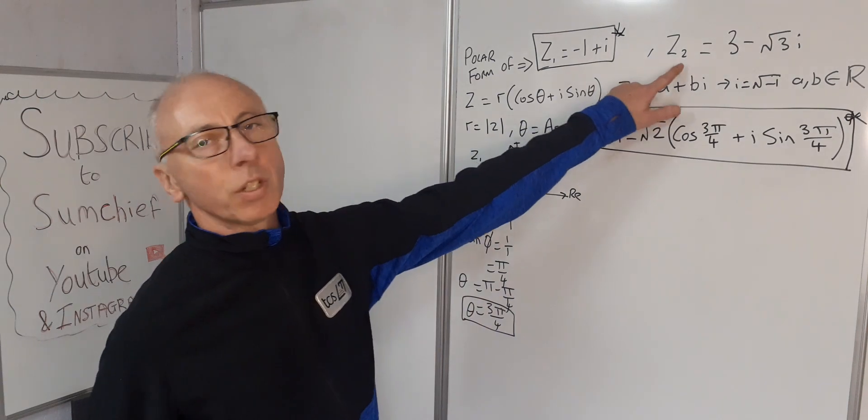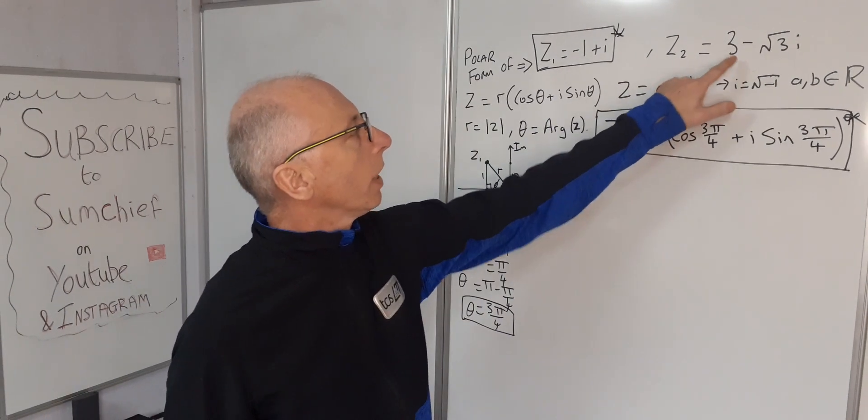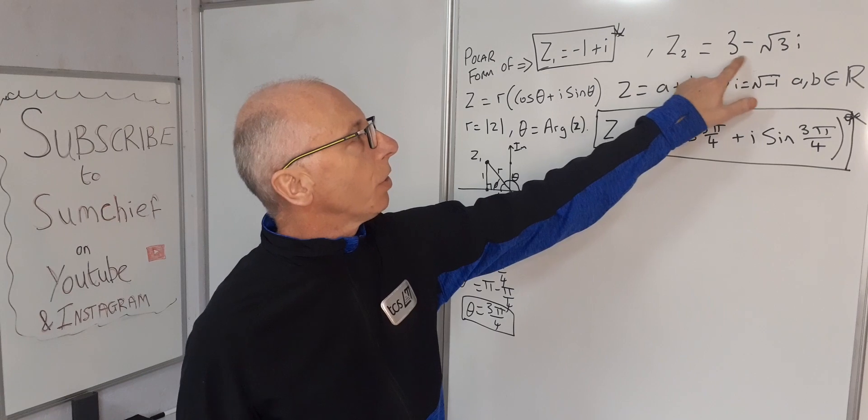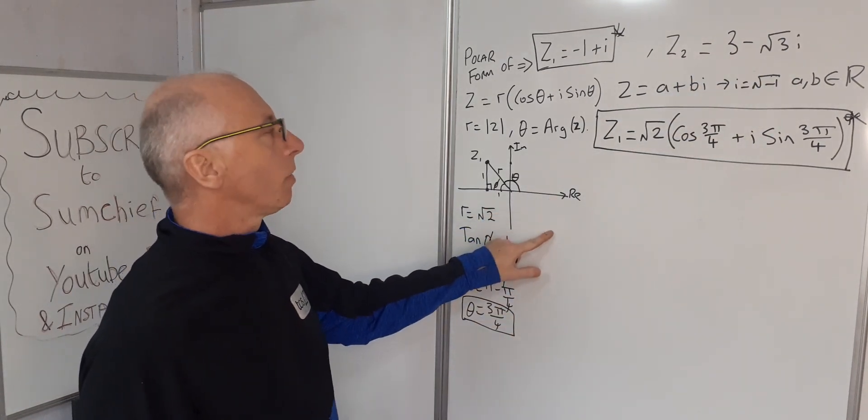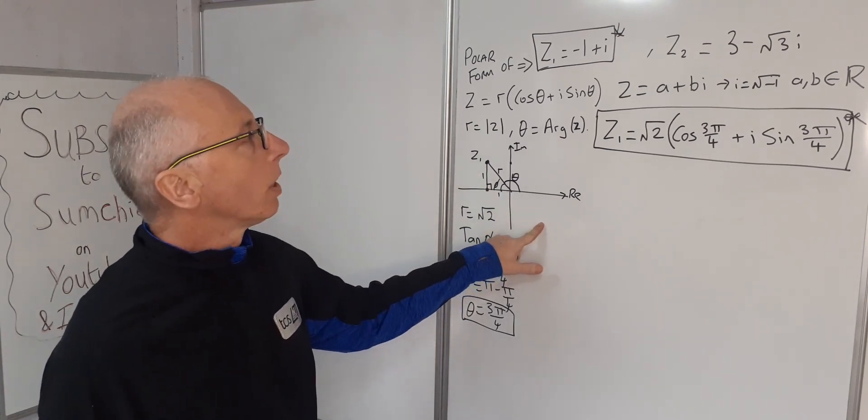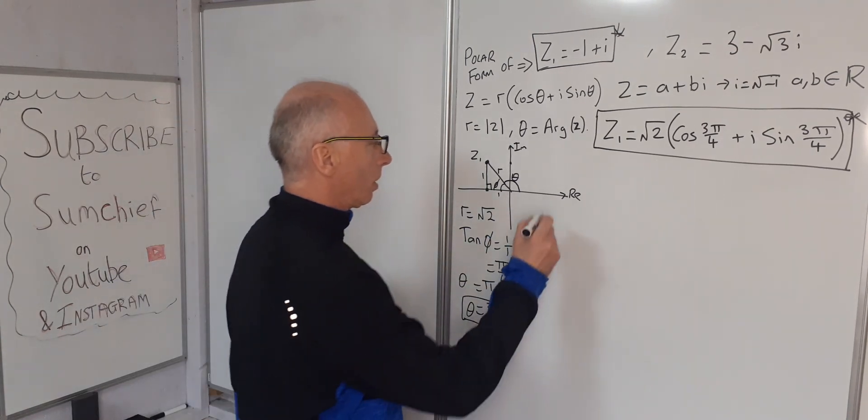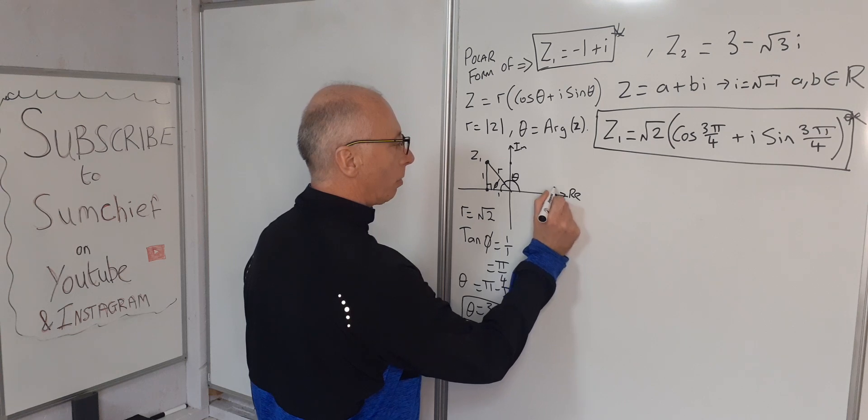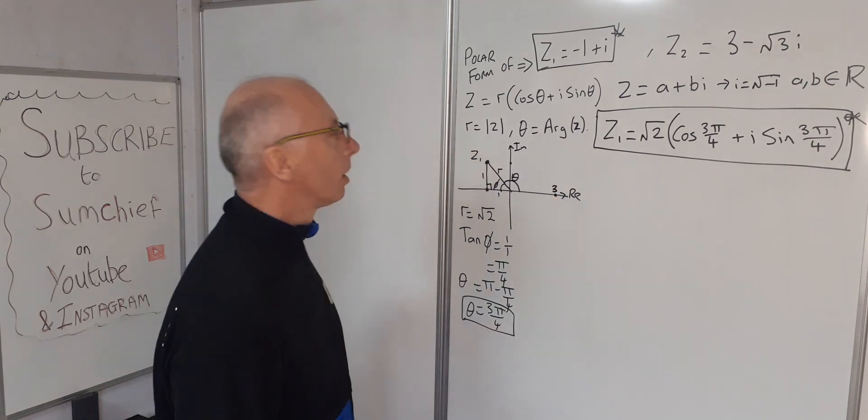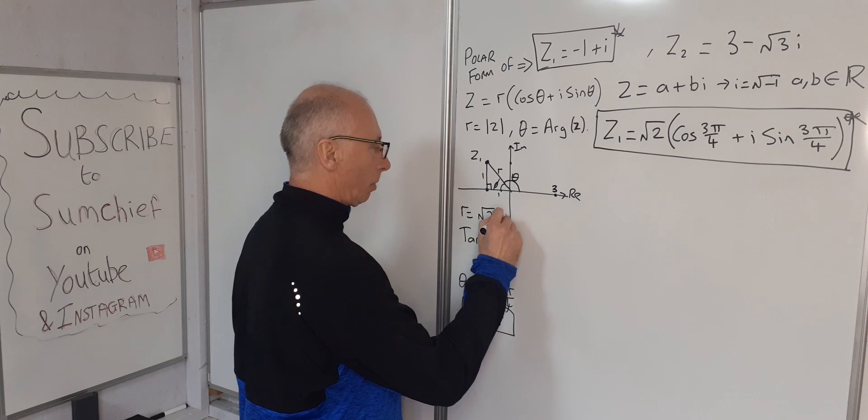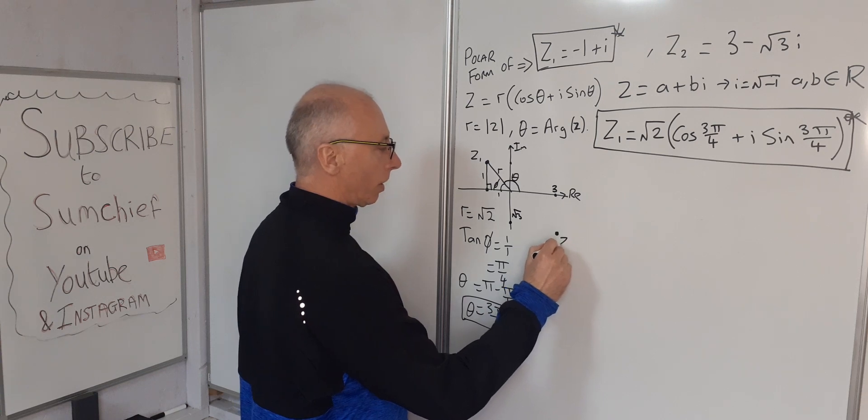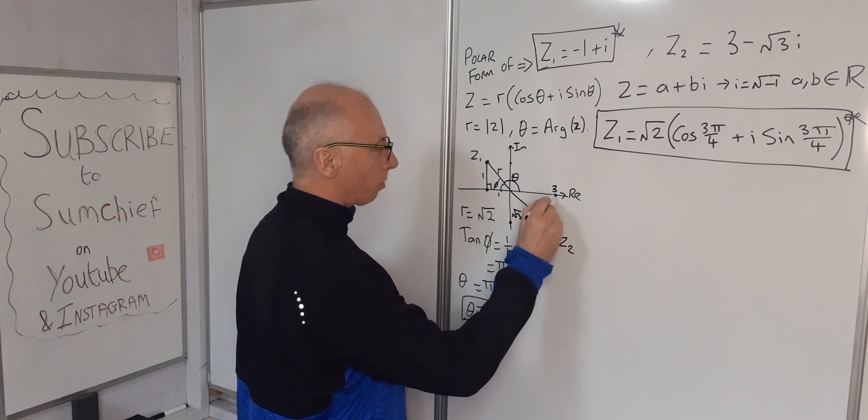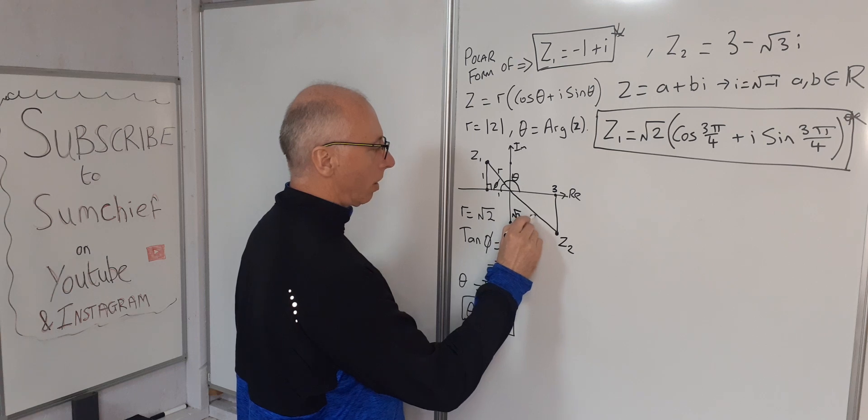Now let's look at z₂. Using a + bi as our complex number, 3 - √3i. Positive reals, negative imaginary, so that brings it into the fourth quadrant. So 3 will be around here somewhere, √3 is going to be here somewhere, bringing us about here for our z₂. That's our r here.